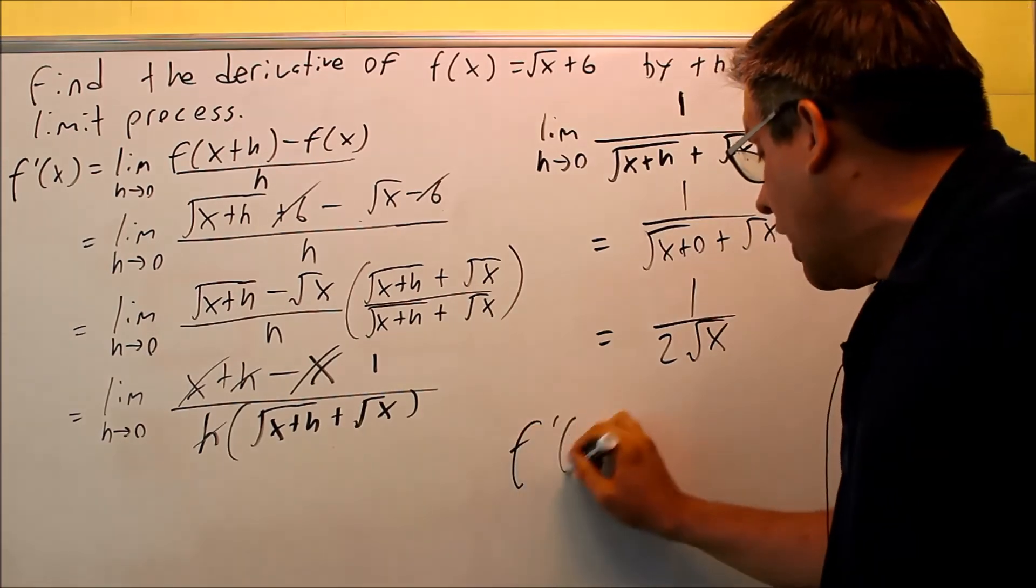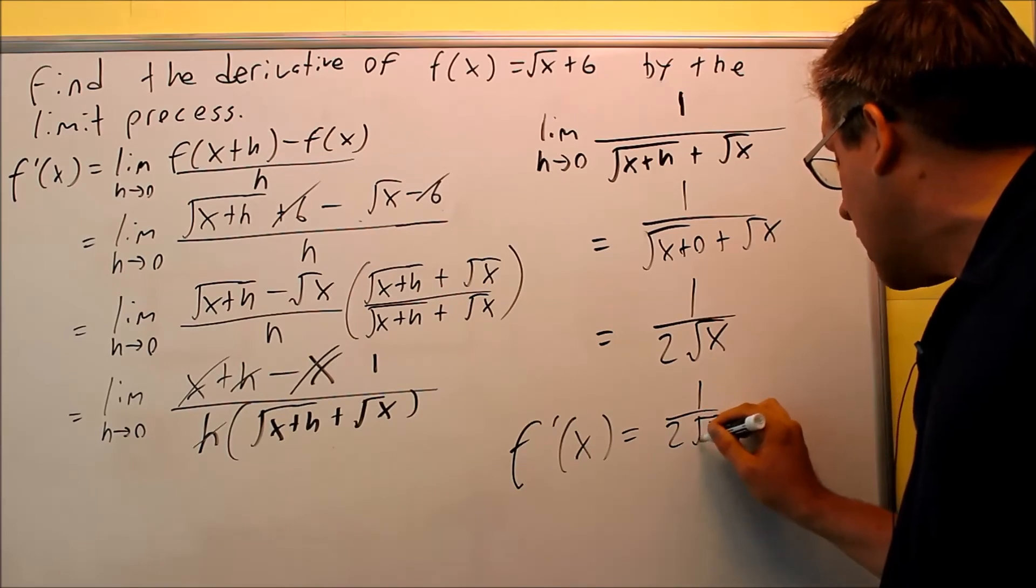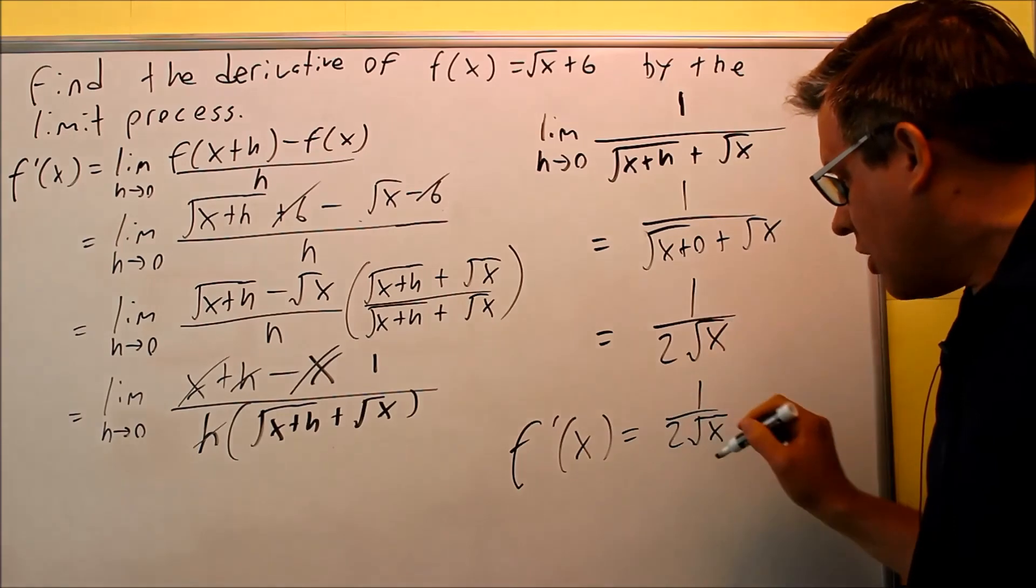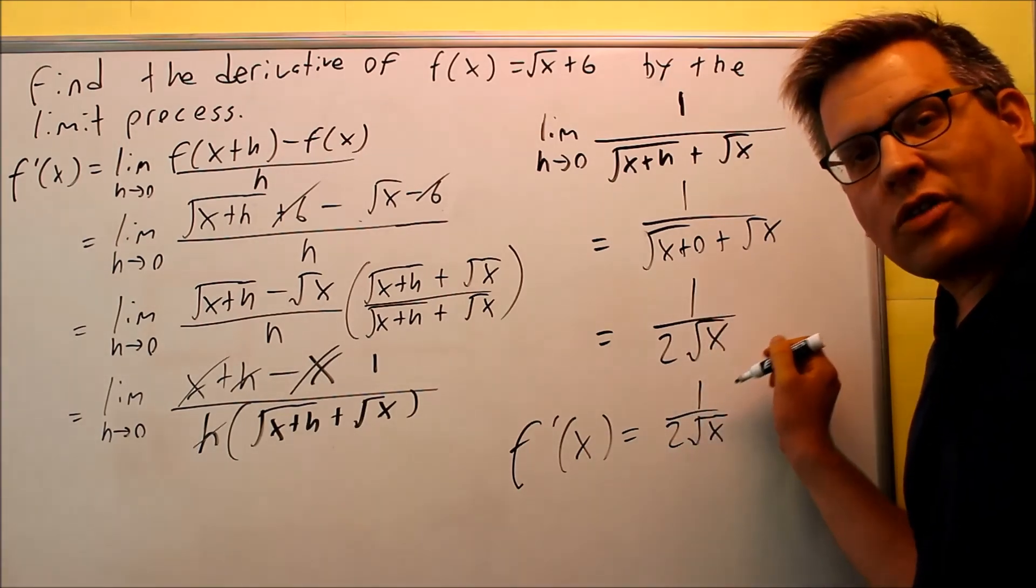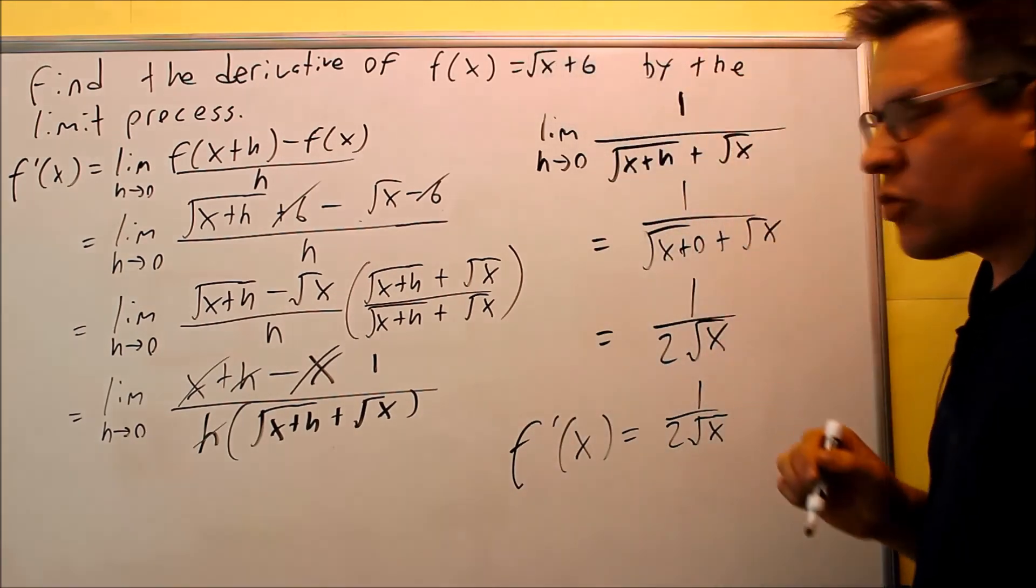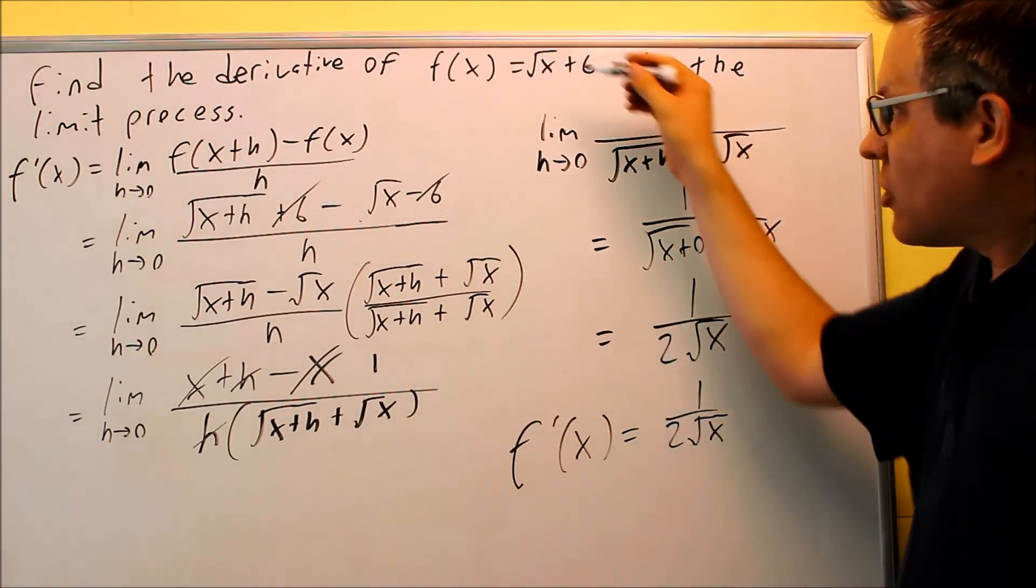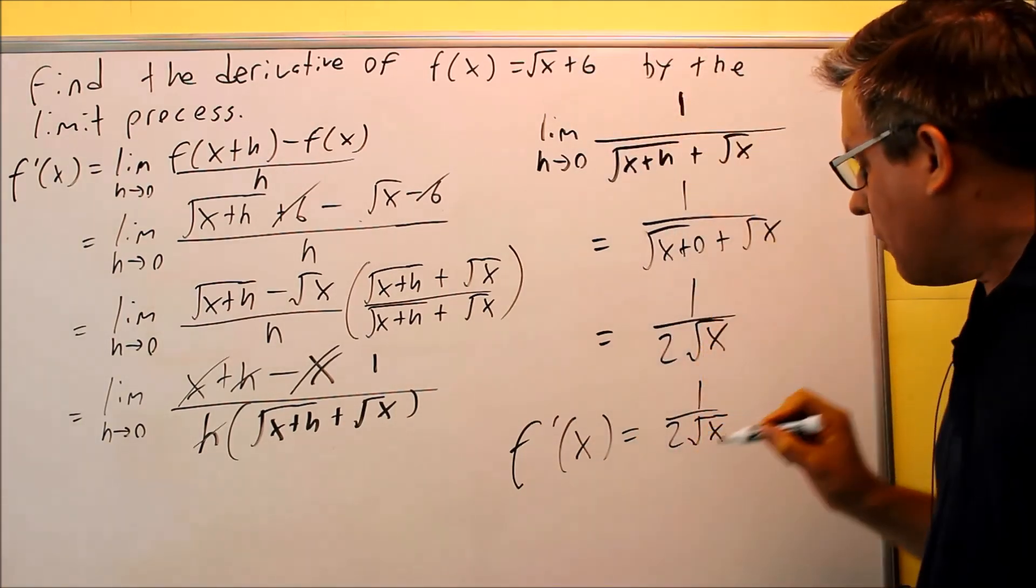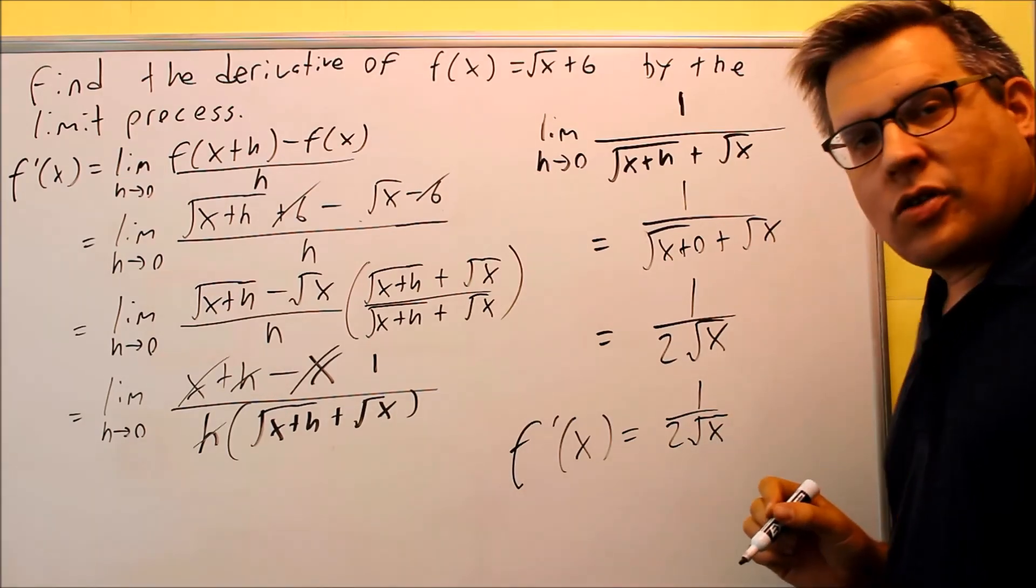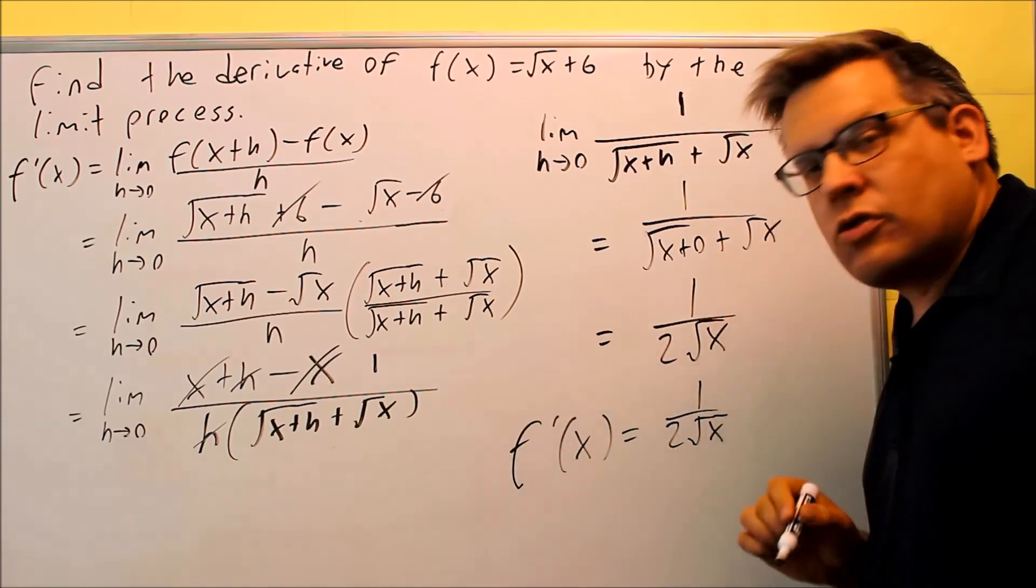So my answer, I would put f prime of x equals 1 over 2 square root of x. So this would be the derivative, which means, again, what does this mean? This is a formula that I can use to find the slope in any place I want to on this right here, square root of x plus 6. So if I wanted to find, for instance, a slope of a tangent line, I can just pick a value of x, put in there, and I put that in here, and that will give me the slope at that particular place. So again, this is my derivative, 1 over 2 square root of x.